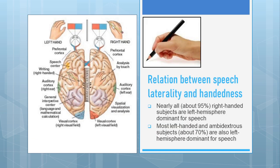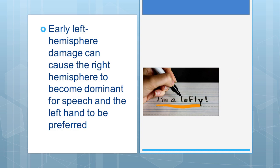Now let us see whether there is any relation between speech or language laterality and handedness. Nearly all right-handed people have their left hemisphere dominant for speech. But most left-handed or ambidextrous people — that is, people who can use both right and left hands equally well — are also left hemisphere dominant for speech. If there is any damage to the left hemisphere at an early stage in development, then the right hemisphere will become dominant for speech and the left hand will be preferred.